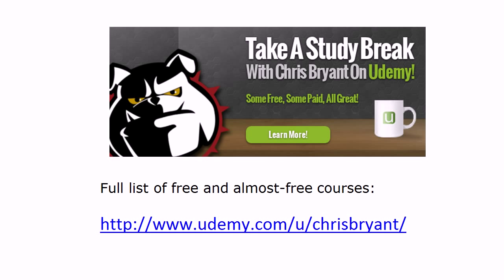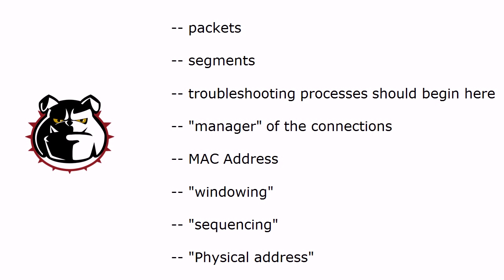One of the topics on this screen relates to what I was just talking about. For this lightning round, what I need you to do is look at each of these eight terms — or just words in some cases — and tell me which layer of the OSI model each applies to. Going from top to bottom, we're looking at: packets, segments, where troubleshooting processes should begin, manager of the connections, MAC address, windowing, sequencing, and physical address.